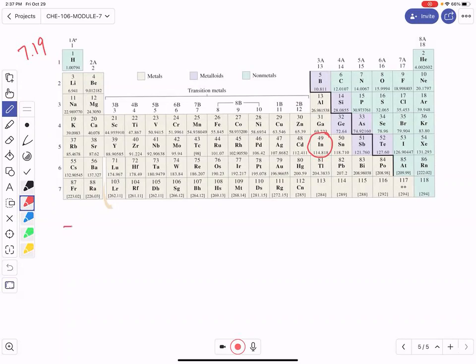So the condensed configuration would be krypton, and then 5s2, 4d10, and then 5p1 would be the condensed configuration of indium.